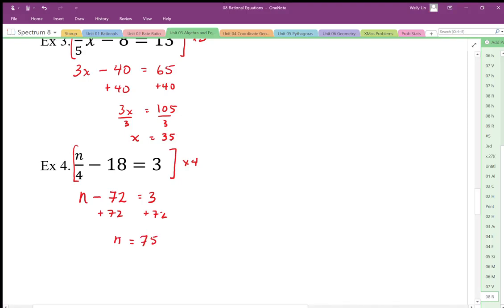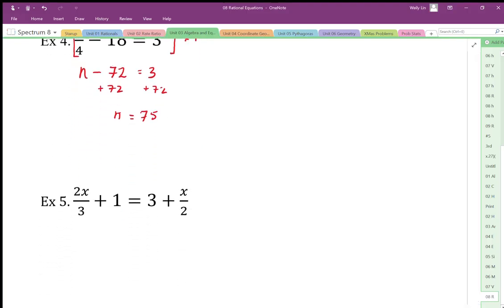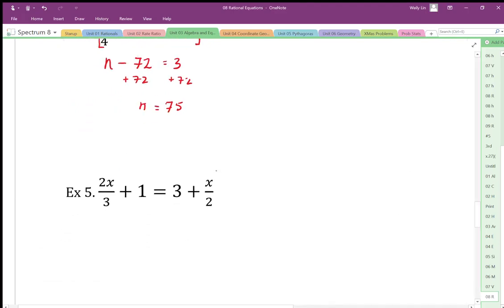Okay, so here I have a divide by 3 and a divide by 2. Well, I think I'm just going to get rid of those divides by multiplying by 2 and multiplying by 3. Okay, so really I'm just multiplying by the lowest common denominator, which is 6.